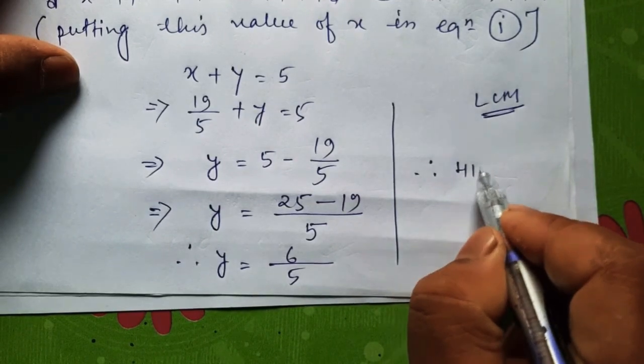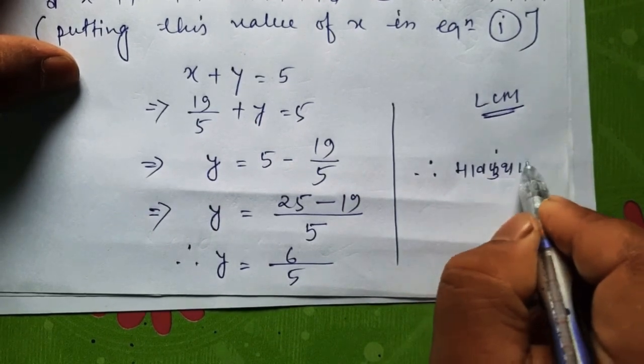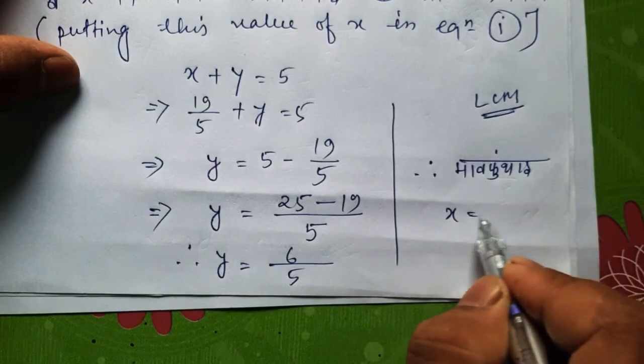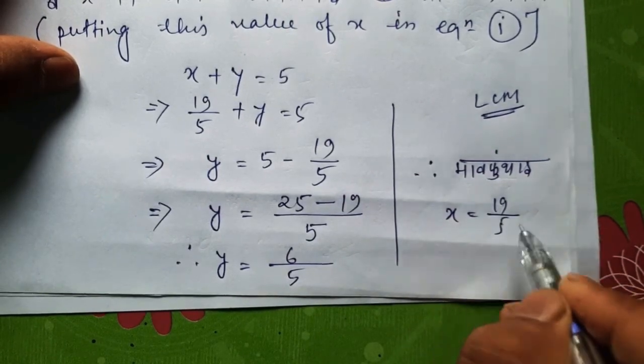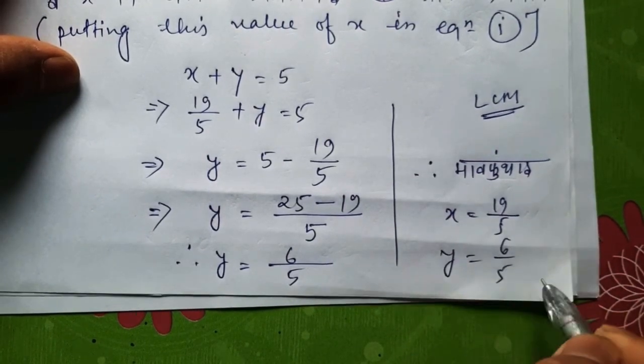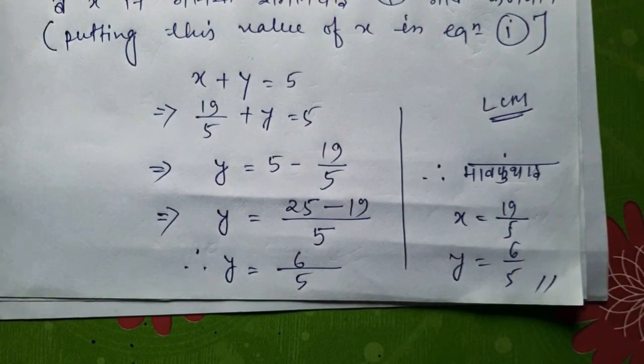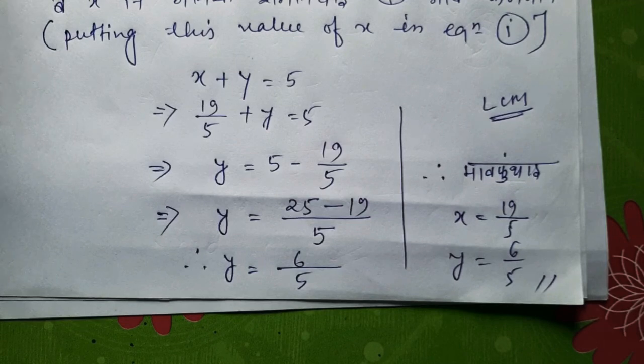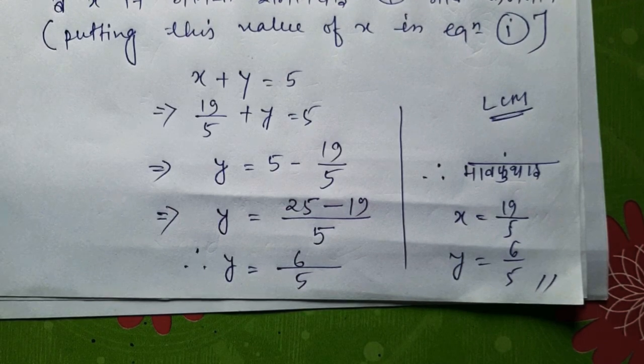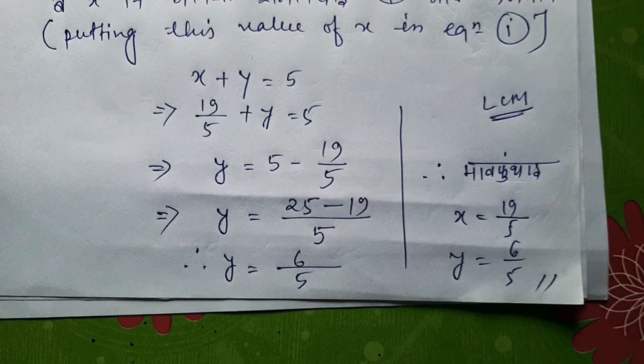Therefore, the required solution is x equals 19/5 and y equals 6/5. This completes our answer. Please comment below if you have any questions, and like the video. Subscribe to the channel for more videos.